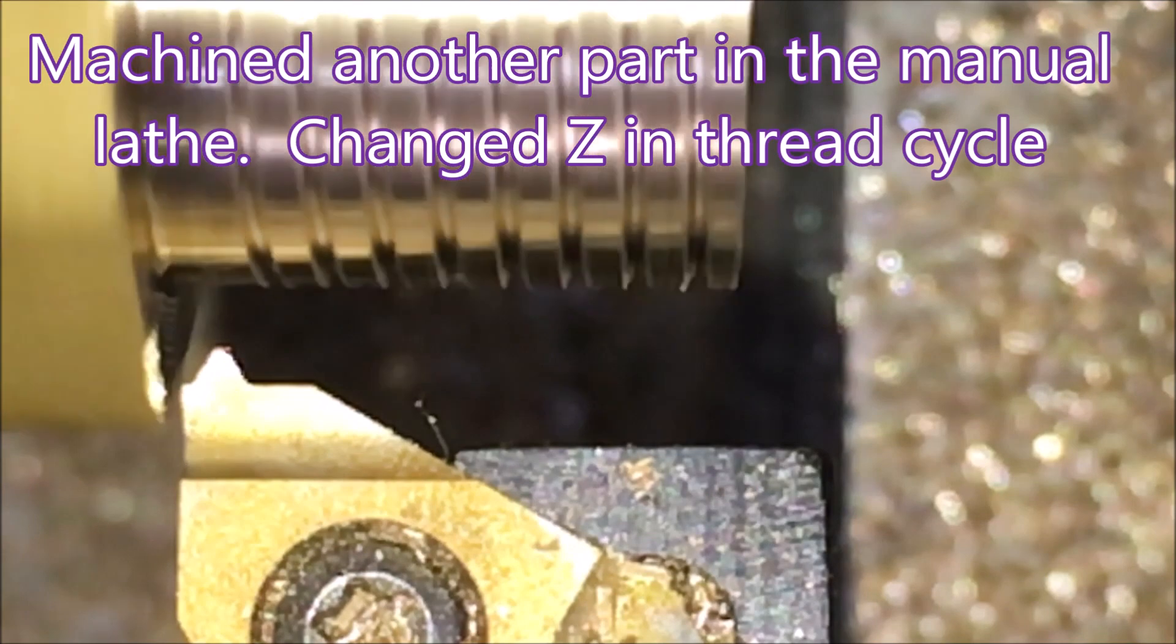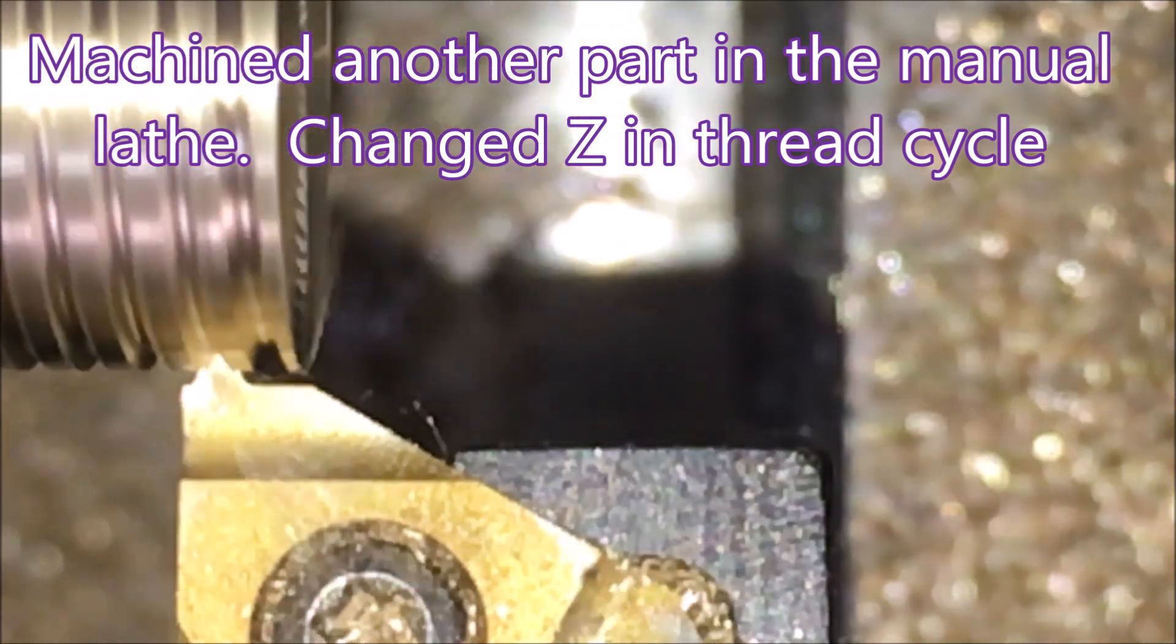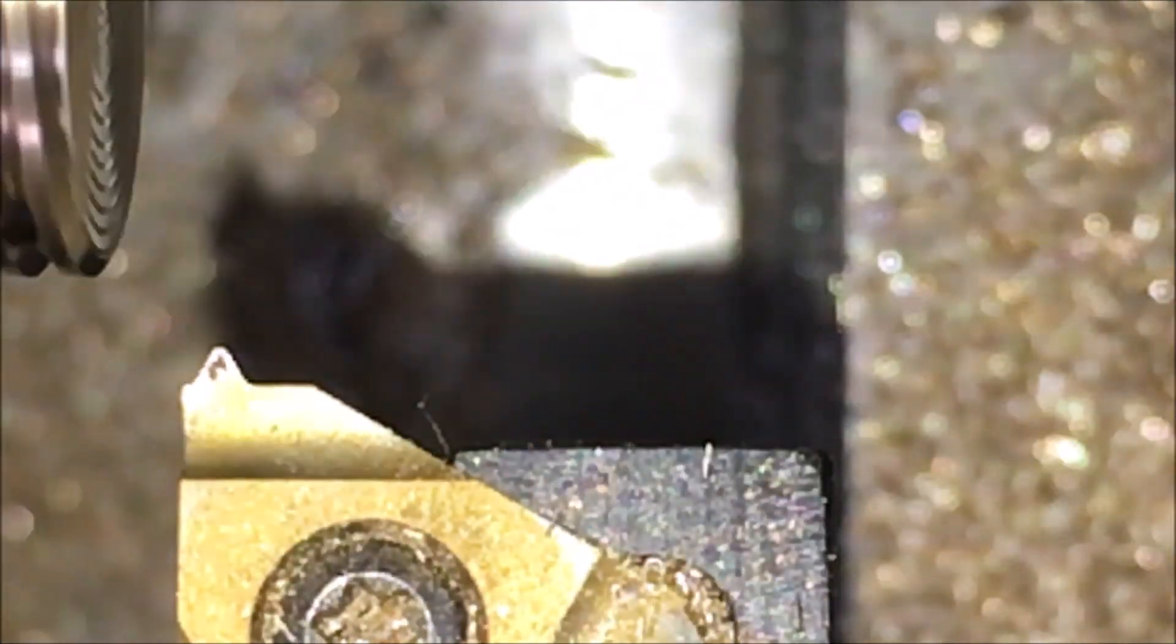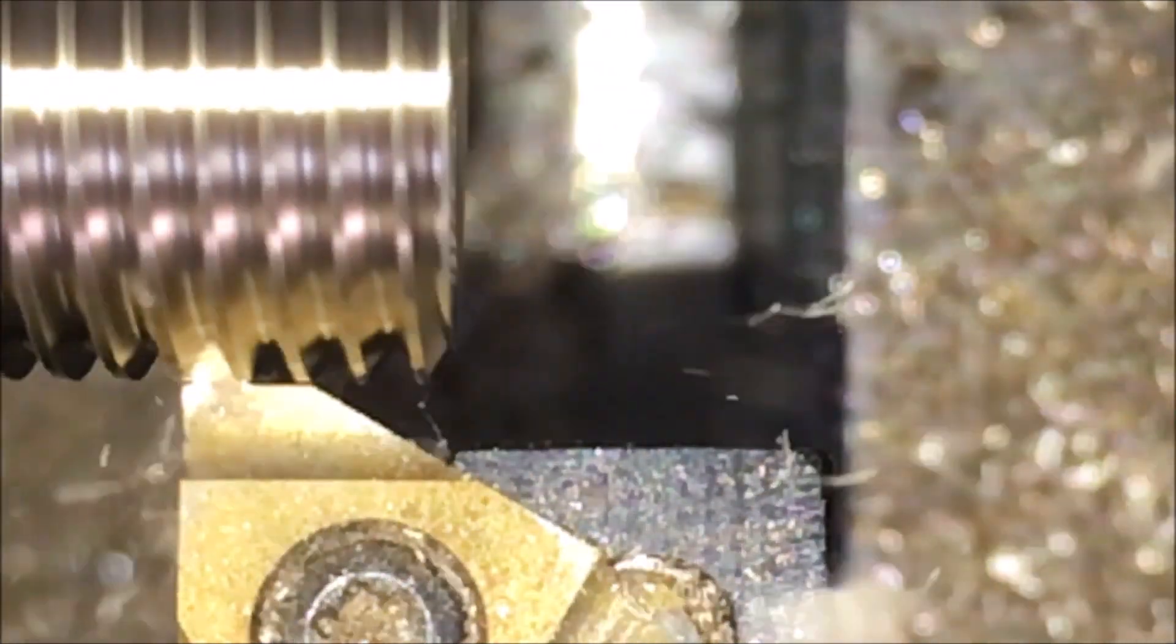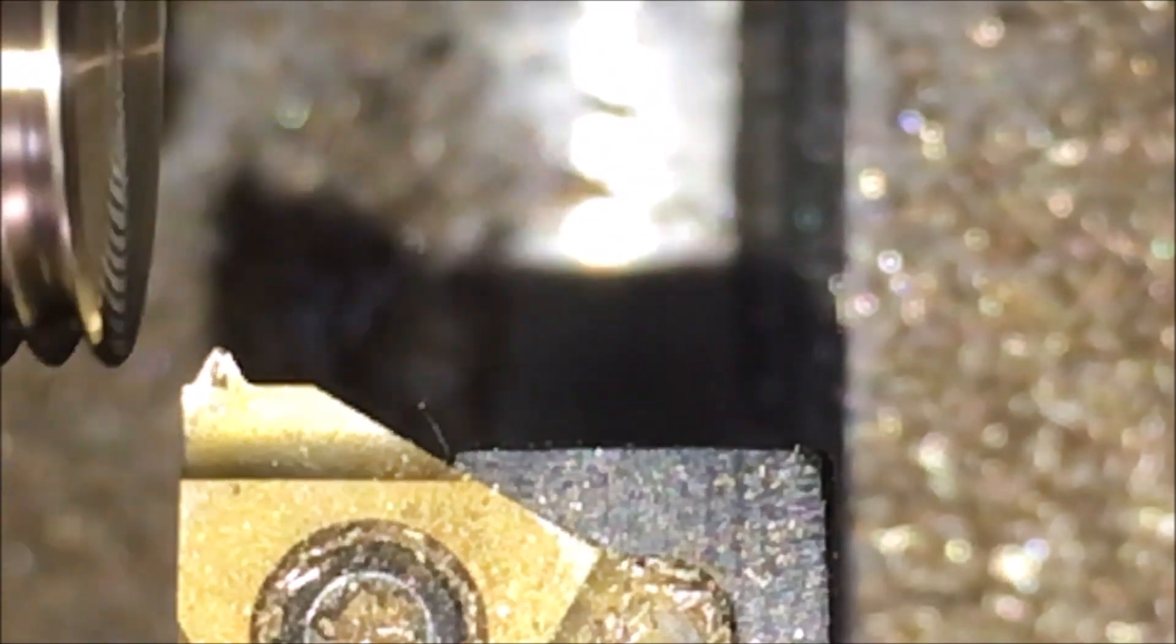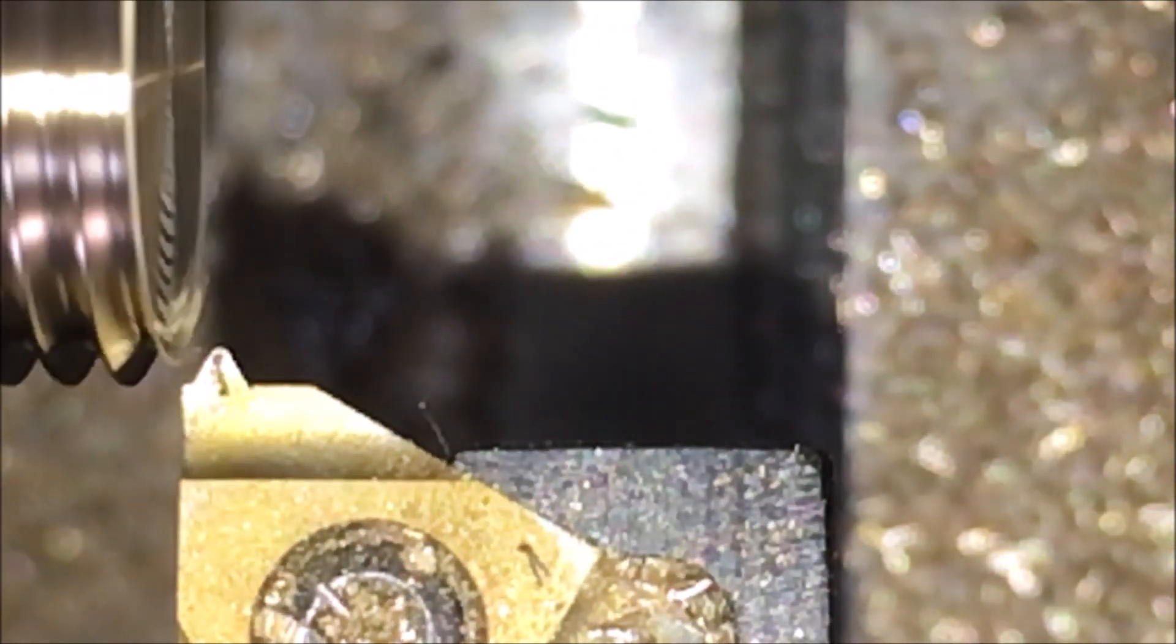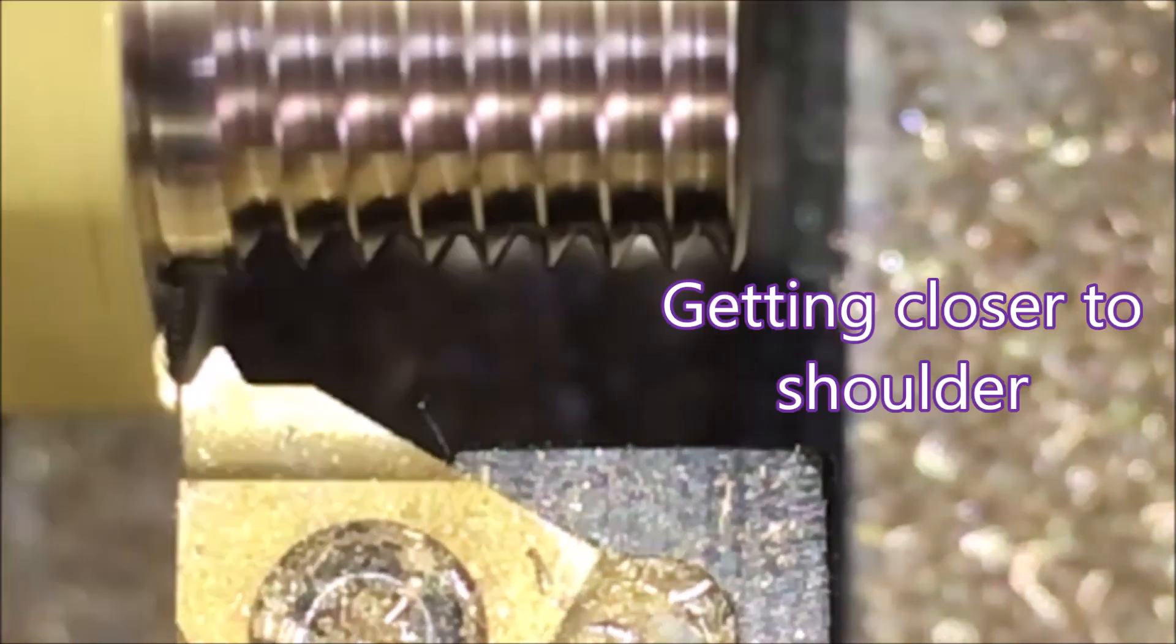So I immediately went and changed the Z offset in the program and changed the Z in the thread cycle to get closer to the shoulder. So there you can see we're cutting the thread. This is using an iPhone attached to the turret and I think it's working reasonably well.